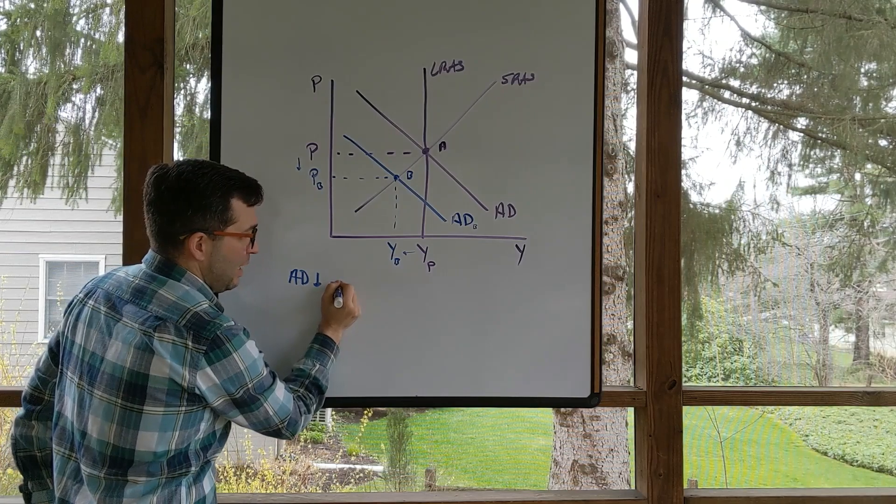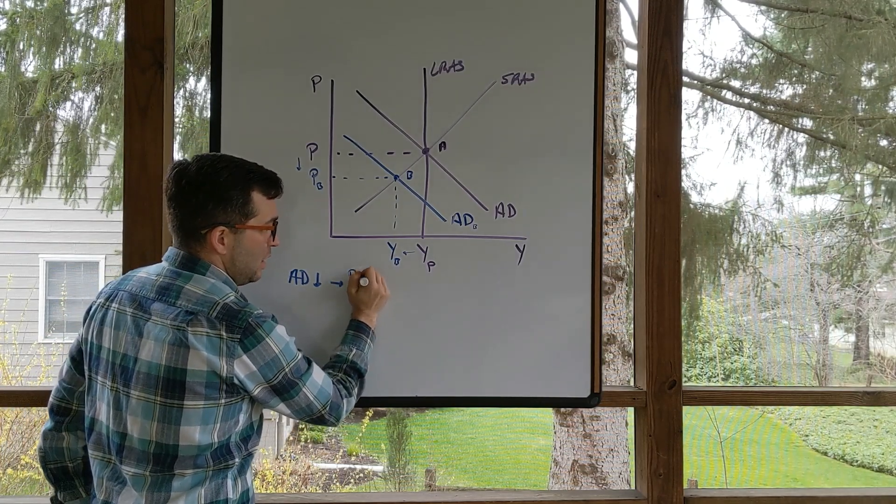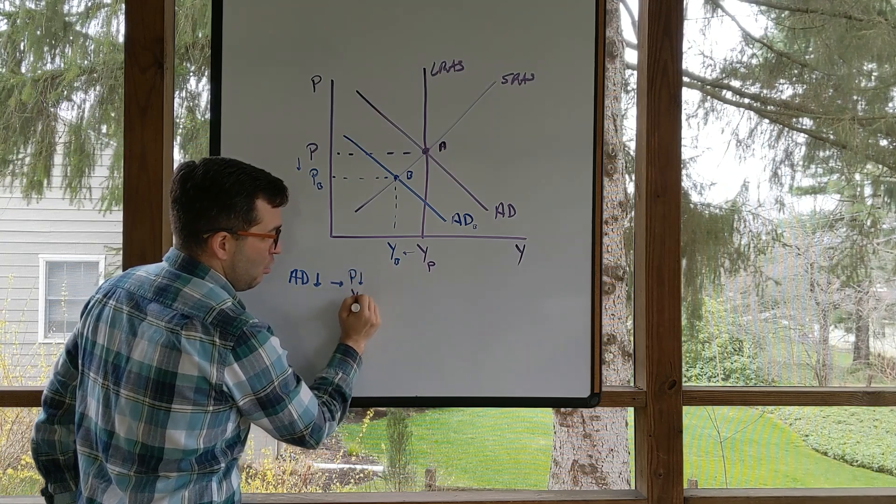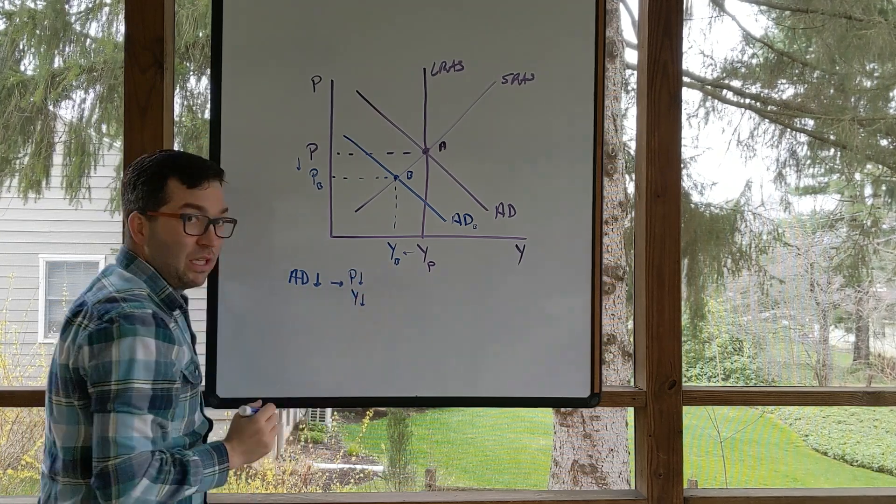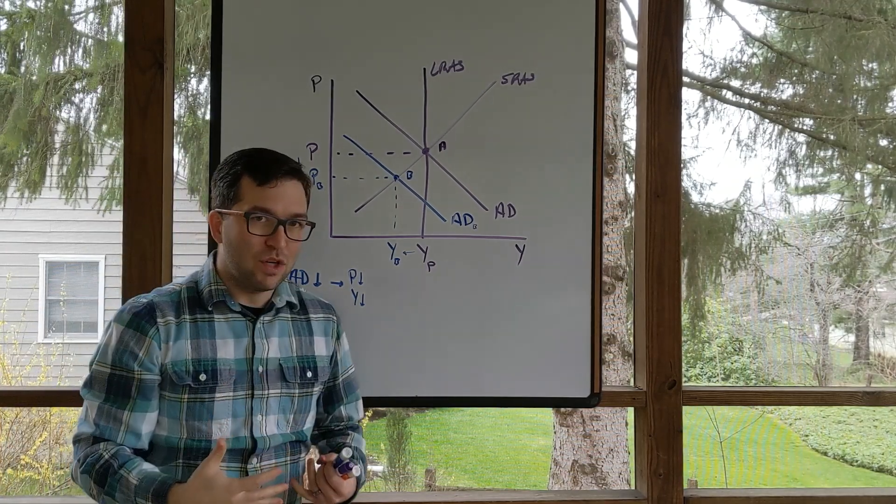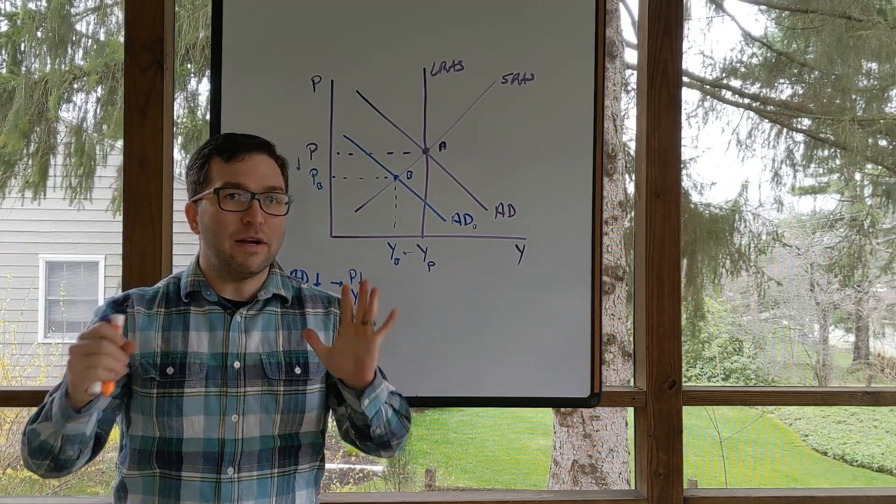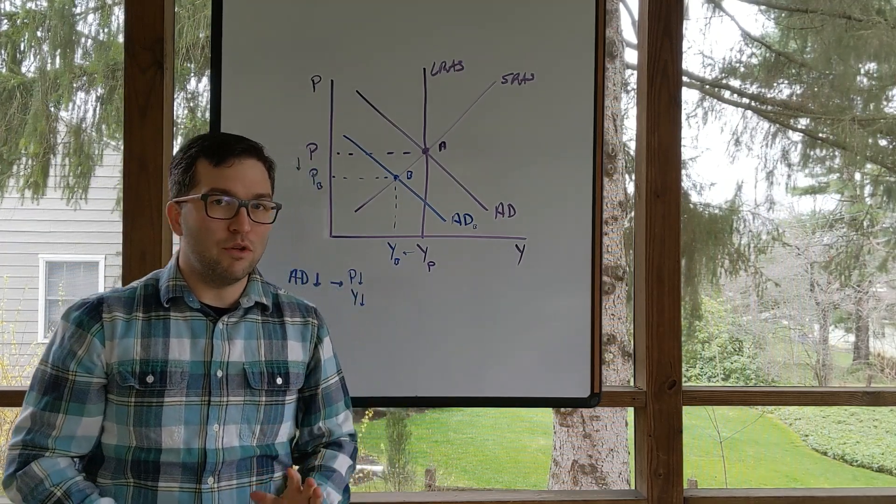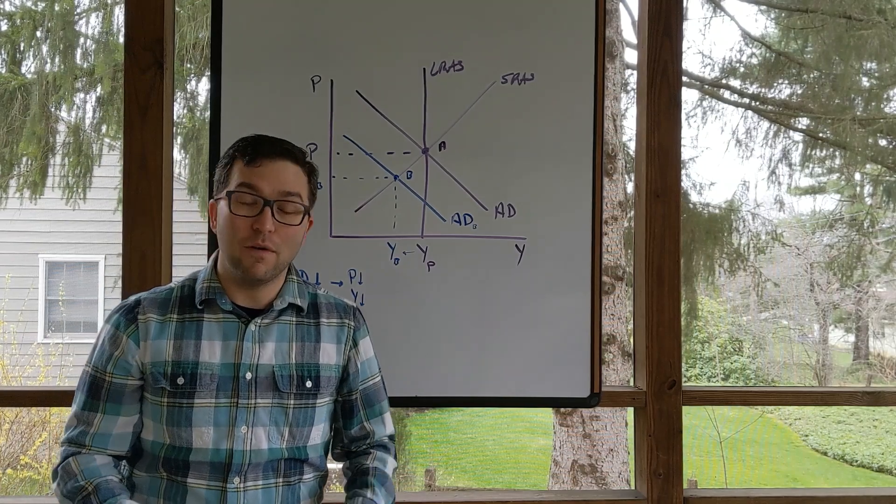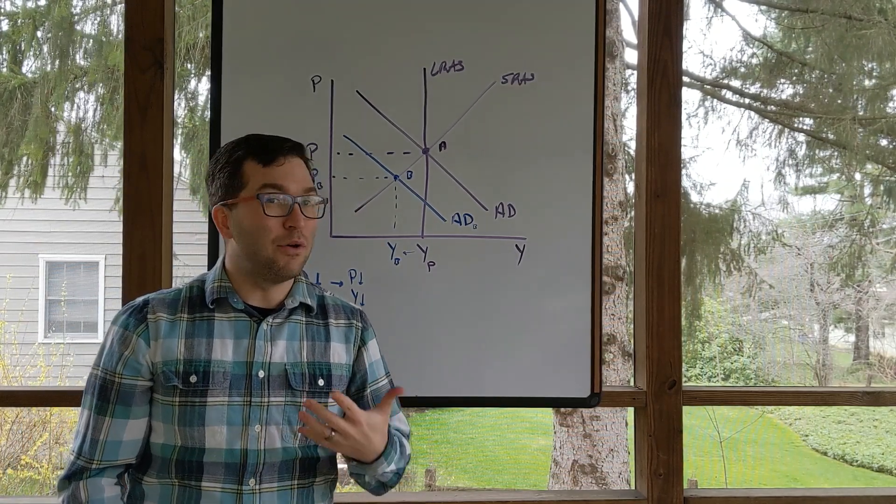This aggregate demand shifting to the left is going to cause my price level to decline and also my GDP to decline. What happens going forward? The adjustment process is what we're interested in because without any government intervention, we're going to assume that the economy will adjust itself, assuming that prices and wages are flexible. How does this happen?